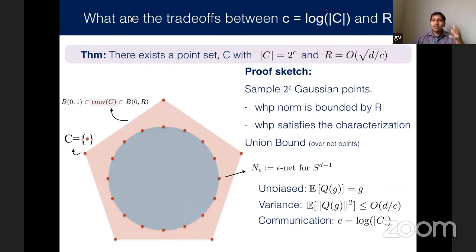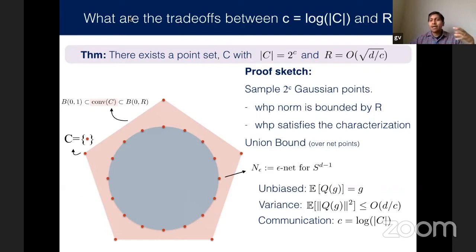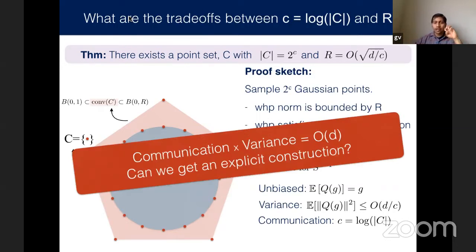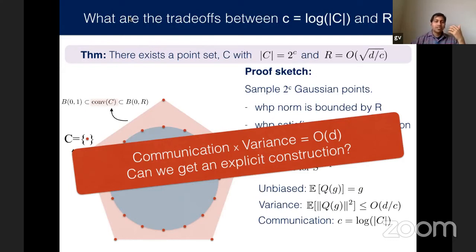The random sampling result shows that communication times variance is about D, so for any C bits of communication you can achieve variance D/C. This is a randomized construction. One goal of this work is to find explicit constructions of such point sets. On one end of the spectrum, any scaled epsilon-net gives a constant variance with D bits of communication, already achieving a non-biased estimate, but computing convex combinations with epsilon nets is computationally inefficient.